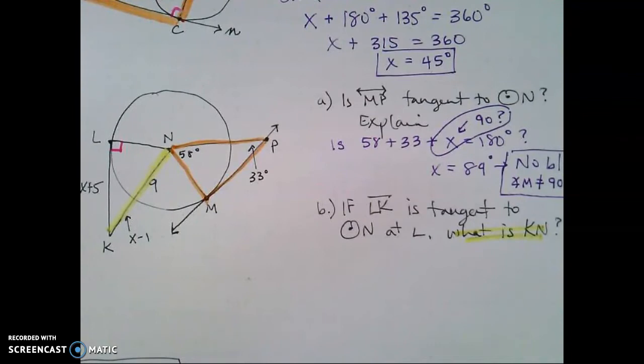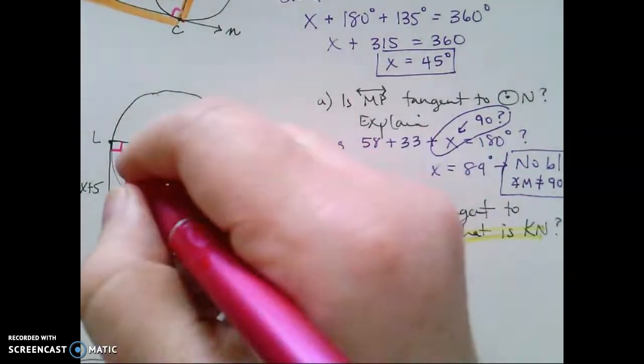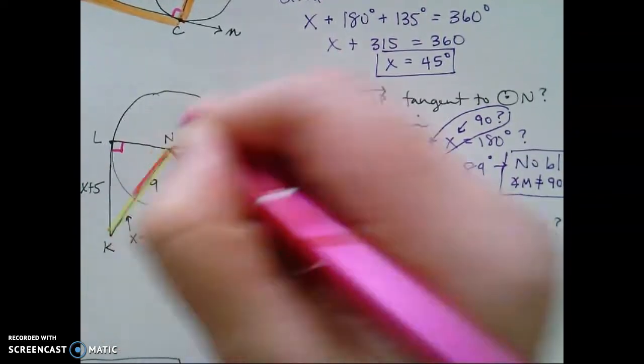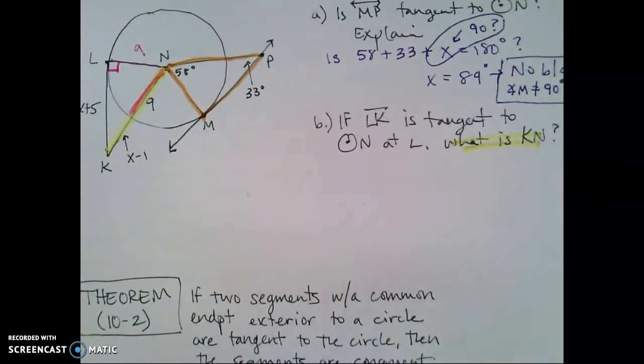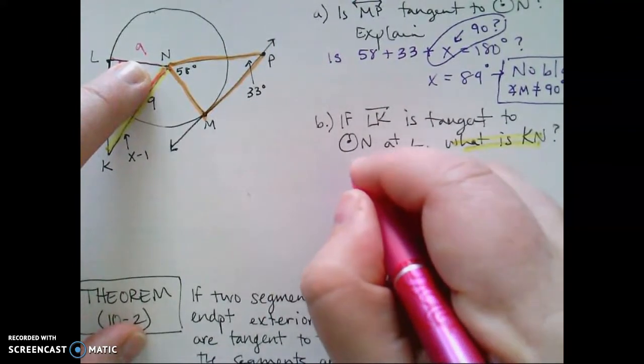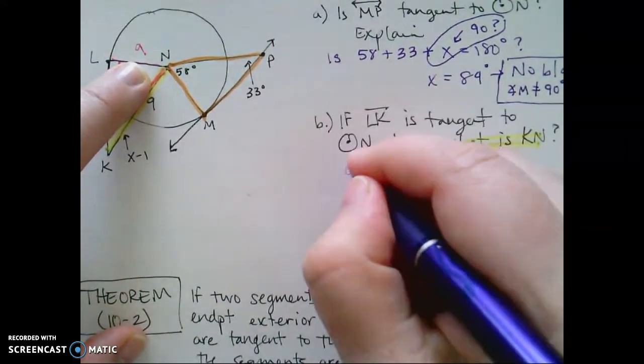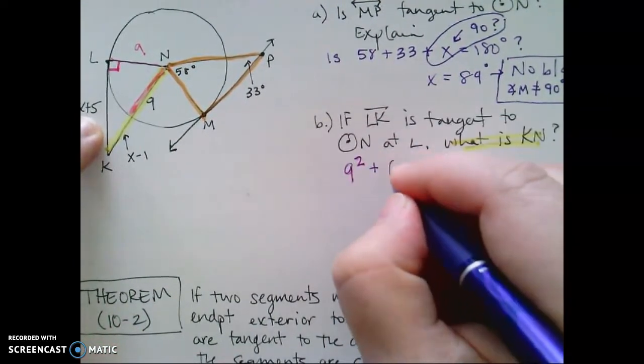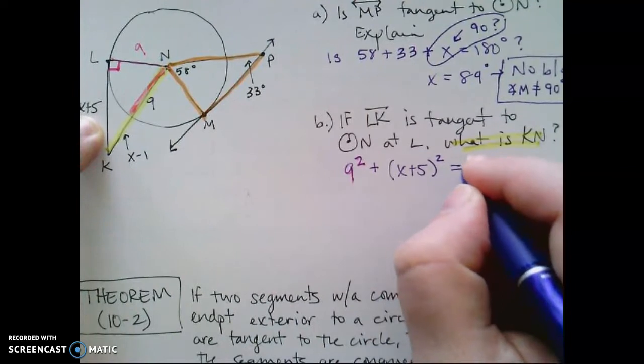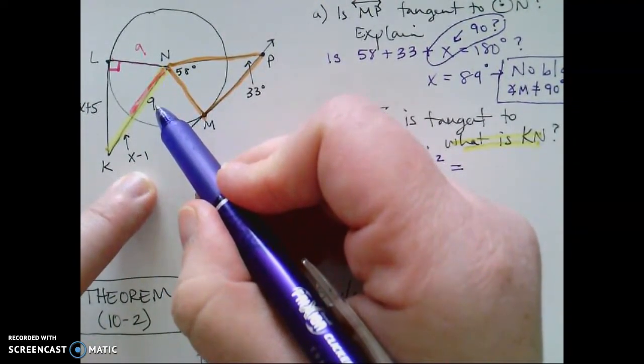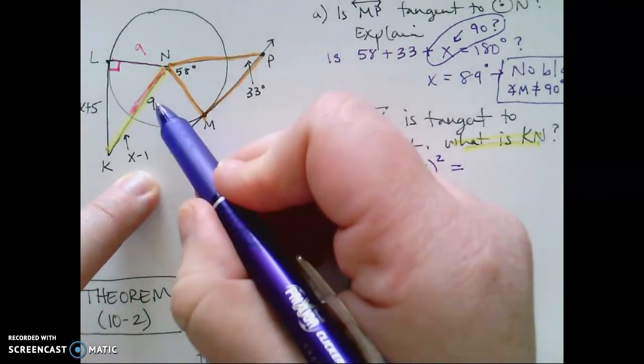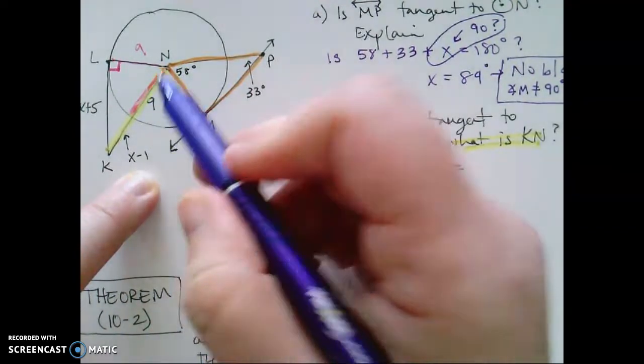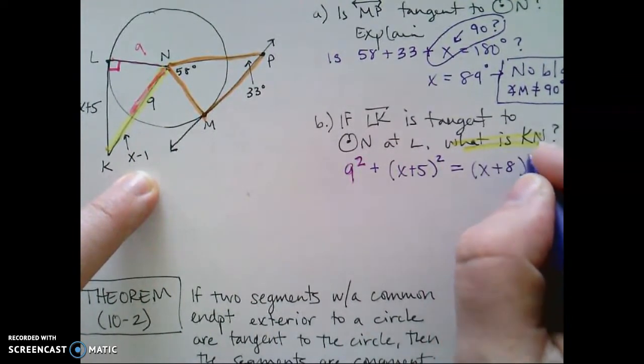Well, I'm dealing with a right triangle. And the right triangle, when we're dealing with side lengths, has to follow the Pythagorean theorem. So if I know that this radius is nine, then that makes this radius also nine. So we're going to set this up. Nine squared, let me use my purple pen here, nine squared plus x plus 5 squared has to be equal to, and I have to add these two segments together. Well, what is x minus 1 plus 9? x minus 1 plus 9 is going to be x plus 8 squared.